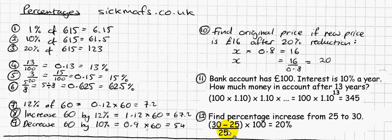I've increased by 1/5 of the original — of course I talk about the original, not the new amount. If I want to convert to a percentage, I multiply by 100: 1/5 of 100 is obviously 20%. So the percentage increase from 25 to 30 is 20%.